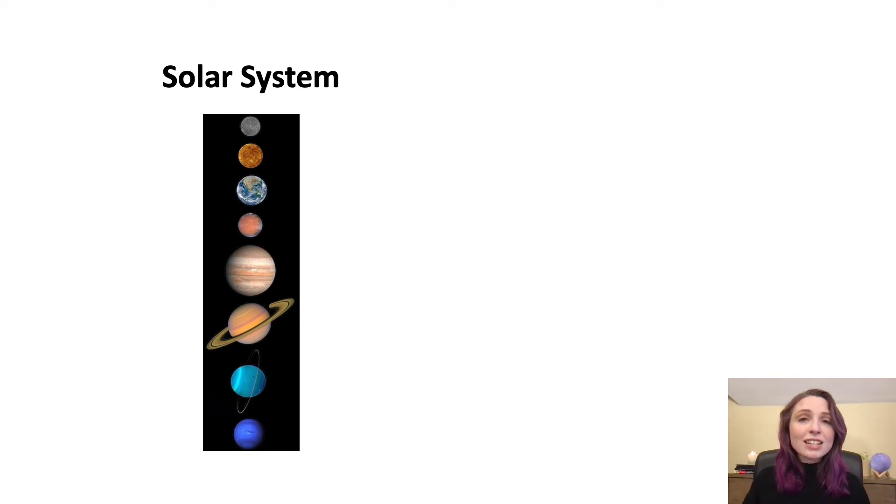Mercury, Venus, Earth, Mars, Jupiter, Saturn, Uranus, Neptune. These are the planets in our solar system and they orbit around the Sun.